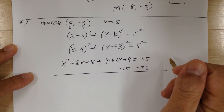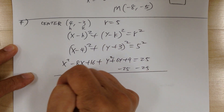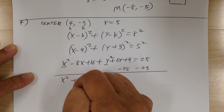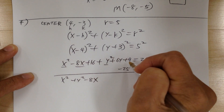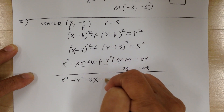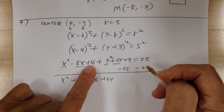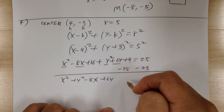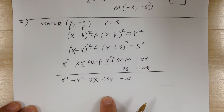Collect terms: x squared, y squared, minus 8x, plus 6y, and then 16 plus 9 is 25 minus 25 equals 0. So you don't have any constant. Looking for the answer — this will be answer B.